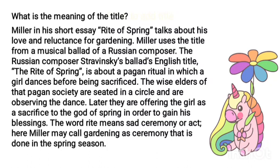What is the meaning of the title? Miller's short essay, Rite of Spring, talks about his love and reluctance for gardening. Miller used the title from the musical ballet of Russian composer Stravinsky. The ballet's English title, The Rite of Spring, is about a pagan ritual scene in which a girl dances before being sacrificed. The wise elders of the pagan society are seated in a circle observing the dance. Later they offer the girl as a sacrifice to the God of Spring in order to gain his blessing. The word 'rite' means a sacred ceremony or act. Here, Miller may call gardening a ceremony that is done in the spring season.